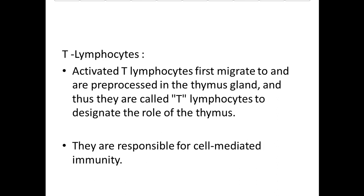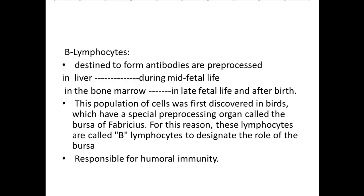All pre-processed lymphocytes end up in lymphoid tissue. T-lymphocytes first migrate to and are pre-processed in the thymus gland — hence the name T-lymphocytes — and are responsible for cell-mediated immunity. B-lymphocytes destined to form antibodies are pre-processed in the liver during mid-fetal life, and in the bone marrow in late fetal life and after birth. These were first discovered in birds in a special organ called the bursa of Fabricius, hence the name B-lymphocytes; they are responsible for humoral immunity.